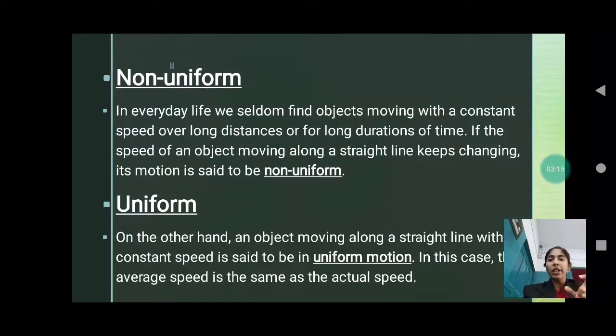If any vehicle is traveling at 40 km per hour speed, but a bumper is coming or any signal has come, the vehicle has to be stopped or has to slow down. If a bumper comes, we have to slow down our vehicle. And if the signal comes, we have to stop our vehicle. This is not a constant speed. So this is a non-uniform motion.